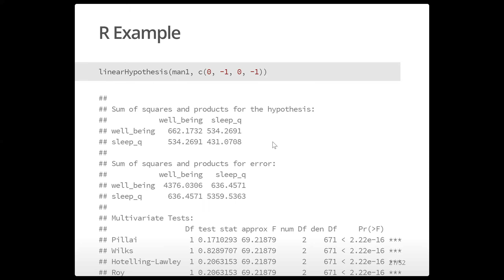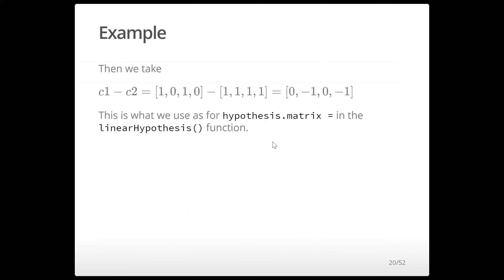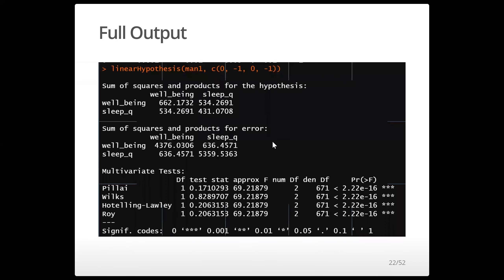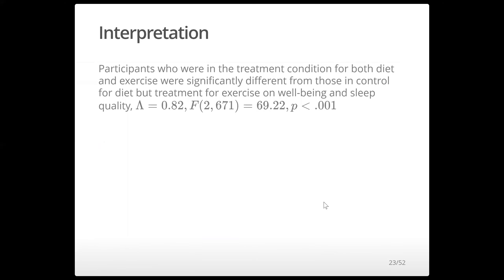Here's the output for this test — the comparison between control-diet/treatment-exercise and treatment-diet/treatment-exercise. This is a pairwise comparison between the two cross groups: control for diet with treatment for exercise versus treatment for diet with treatment for exercise. We see that these groups are significantly different. Participants in the treatment condition for both diet and exercise are significantly different from those in the control for diet but treatment for exercise, on well-being and sleep quality.